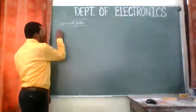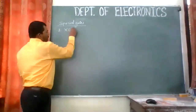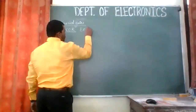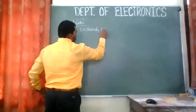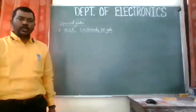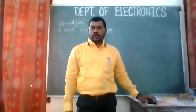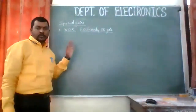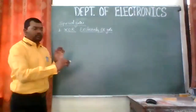We are having two special gates. The first gate is called the XOR gate. XOR gate means Exclusively OR gate. It is called Exclusively OR gate because it shares some parameters of the OR gate, and there is a difference between OR and XOR.